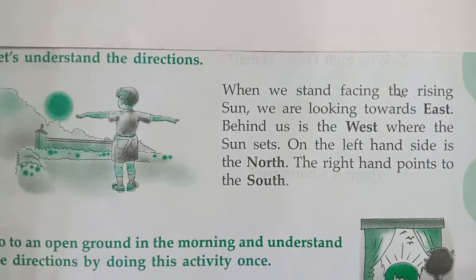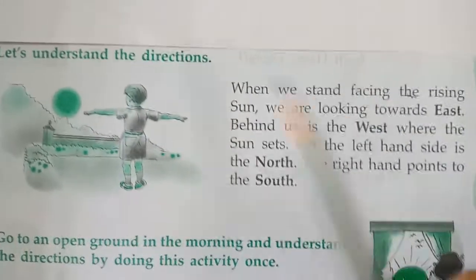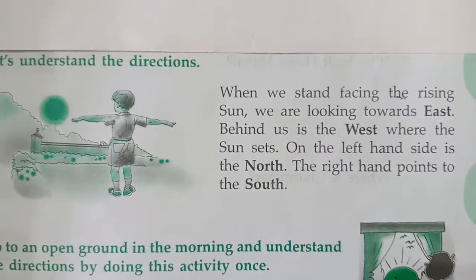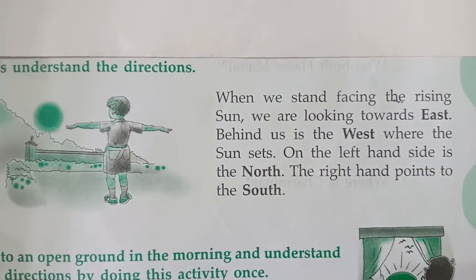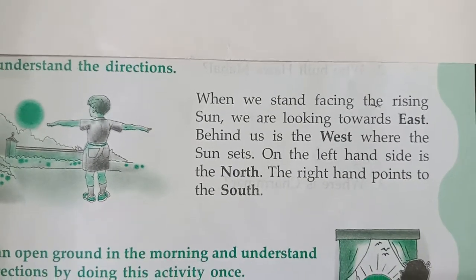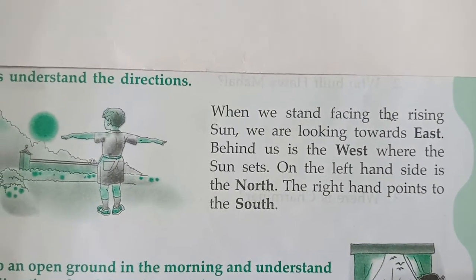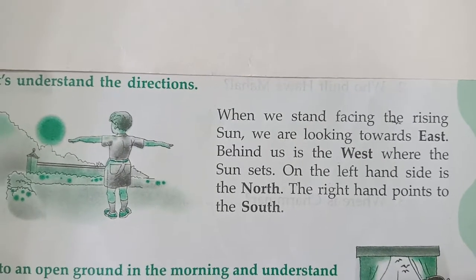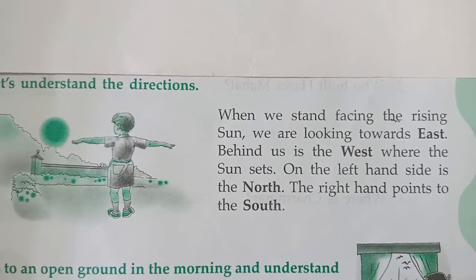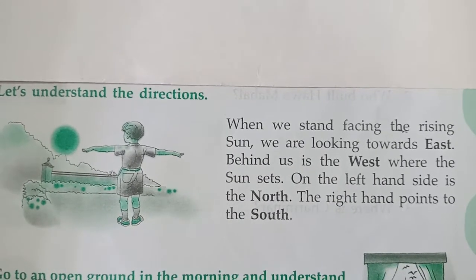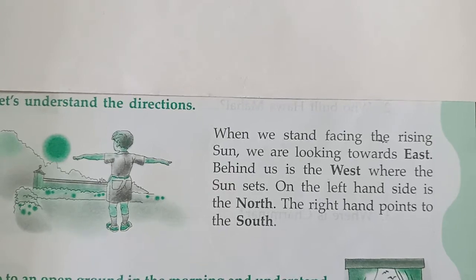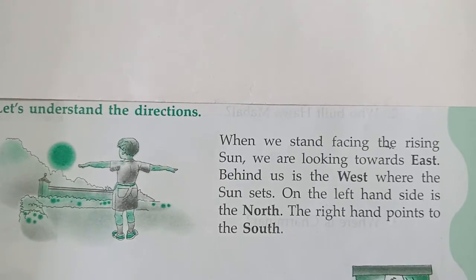When we look towards the sun, we are looking towards the east. Behind us is the west, where the sun sets. On the left-hand side is the north, and the right hand points to the south. So these are the four directions: east, west, north, and south.